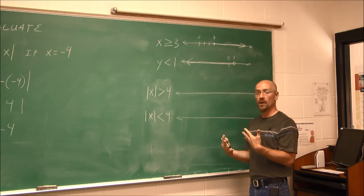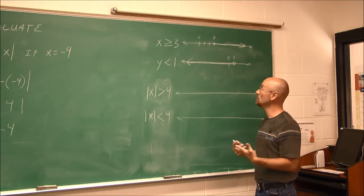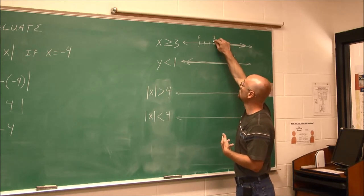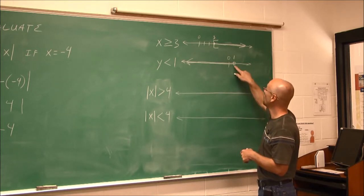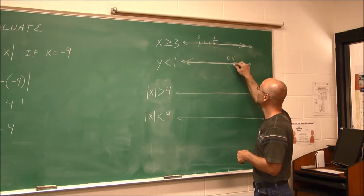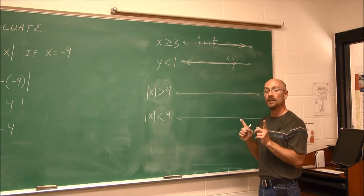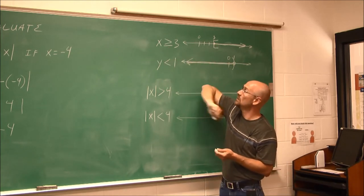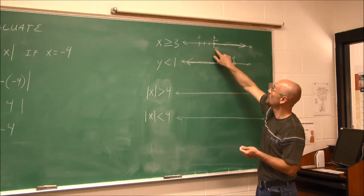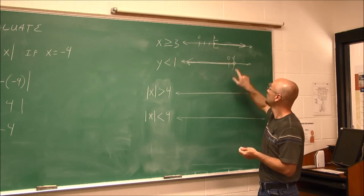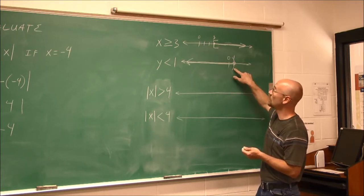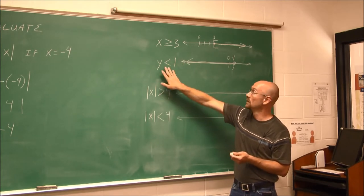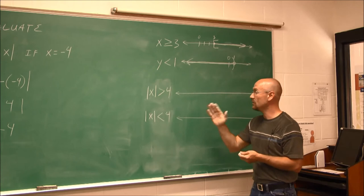When you move on in math, you might see different notation. Instead of a solid circle, sometimes a bracket is used. Instead of an open circle, sometimes a parenthesis is used — they mean the same thing. A solid dot or bracket includes the value, meaning equal to. An open circle or parenthesis means it doesn't include the value — it's strictly less than or greater than.